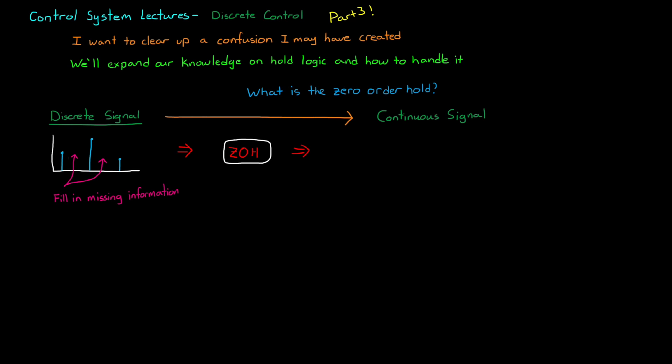With a zero-order hold, we keep the last sample value constant, or with zero slope, until the next sample. This makes the continuous representation a series of step inputs, both stepping up and stepping down.